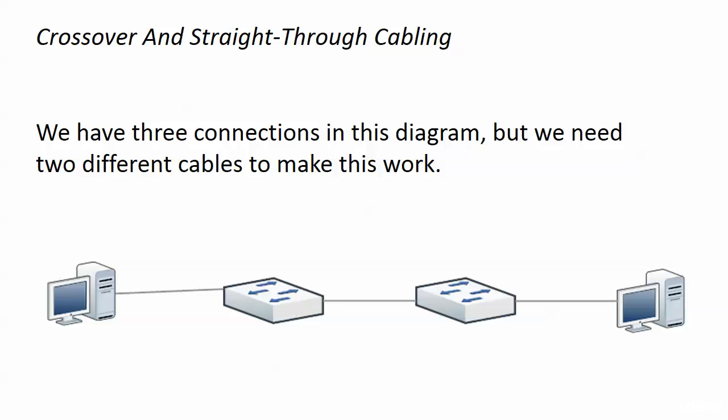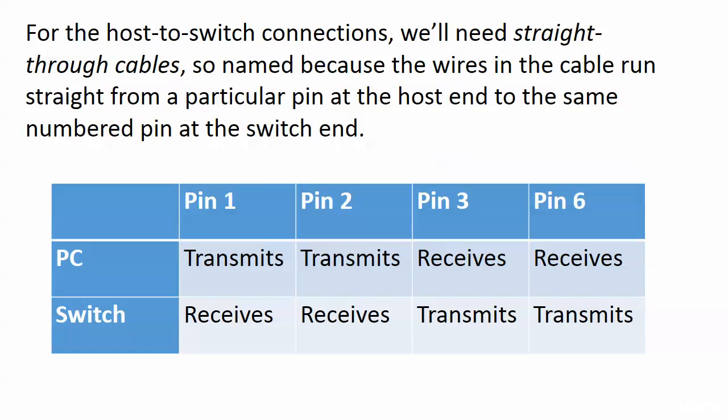In this diagram we have three connections: host to switch, switch to switch, and then switch to host. We need two different cables to make this work, and the first kind of connection we're going to address is the host to switch connection. We have two of those, and for those we're going to use straight-through cables.